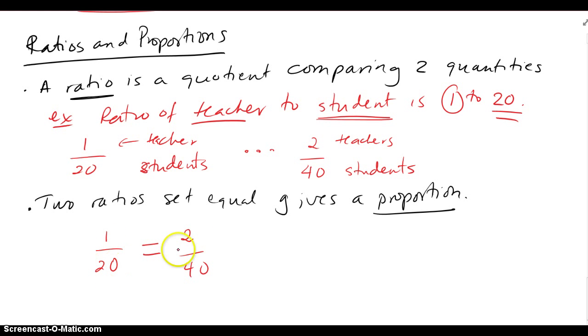And these two ideas are equal. So one teacher for every 20 students, two teachers for every 40 students. When two ratios are set equal, we get a proportion, the idea that any quantity A over B equals the quantity C over D.